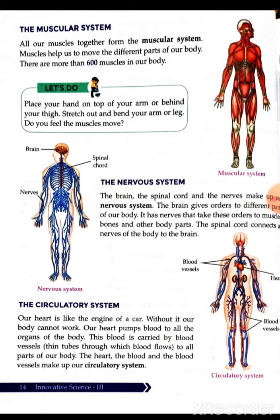The next system is the circulatory system. Our heart is like the engine of a car — without it our body cannot work. Our heart pumps blood to all the organs of the body. This blood is carried by blood vessels, which are very thin tubes that help blood flow from one part to another inside our body. The heart, the blood, and the blood vessels make up our circulatory system.